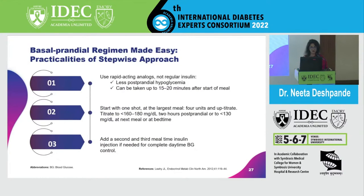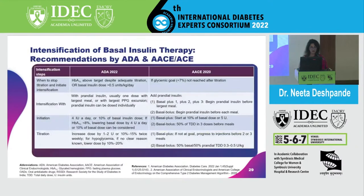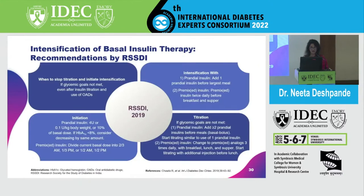The step-wise approach is very easy: step one, step two, step three. Use rapid-acting analogues and not regular insulin, so you have less postprandial hyperglycemia, and they can be taken up to 15 to 20 minutes even after the start of the meal. Start with one shot at the largest meal, keep checking, and then you could add a second and a third. There is enough evidence for all that. The ADA, the ACE, and our very own RSSDI — they all very clearly tell you how to intensify basal insulin therapy, endorsing the view that basal bolus or at least basal plus is physiological, very doable, and patient-friendly.